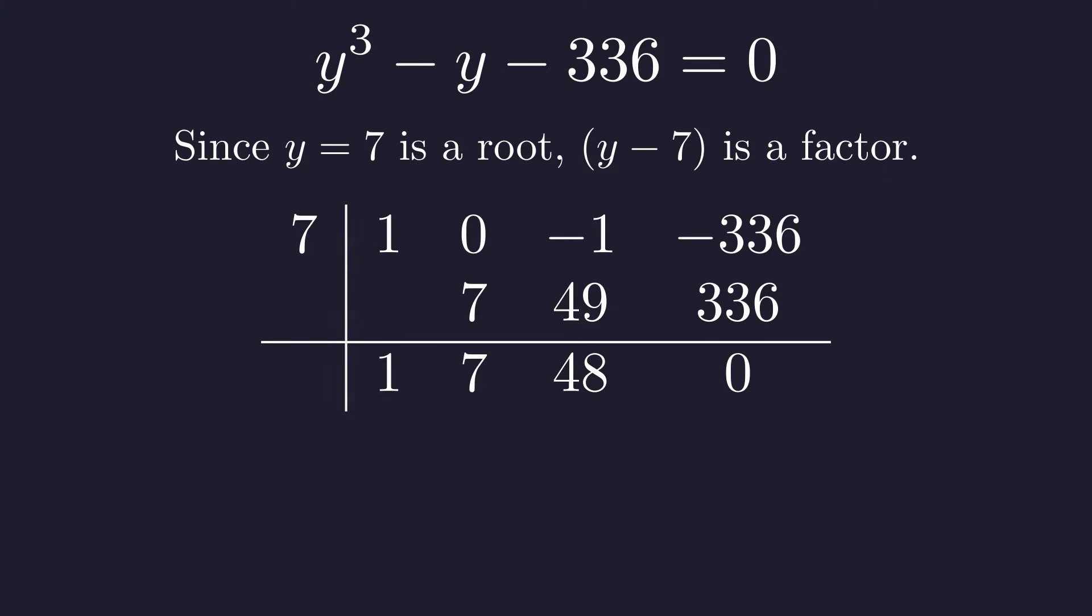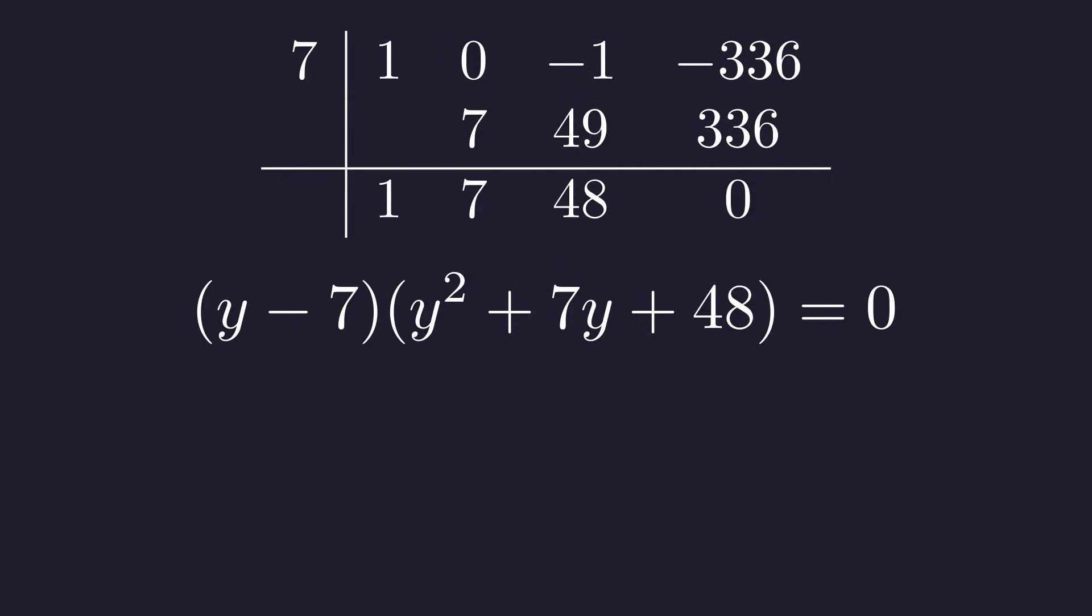We bring down the first coefficient 1, then we multiply it by our root 7 and add it to the next coefficient 0 to get 7. We repeat this process: 7 times 7 is 49, which we add to negative 1 to get 48. Finally, 7 times 48 is 336, which we add to negative 336 to get a remainder of 0. The numbers on the bottom row are the coefficients of our resulting quadratic, so our cubic factors into y minus 7 times the quadratic y squared plus 7y plus 48.